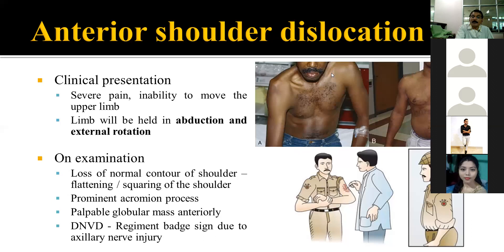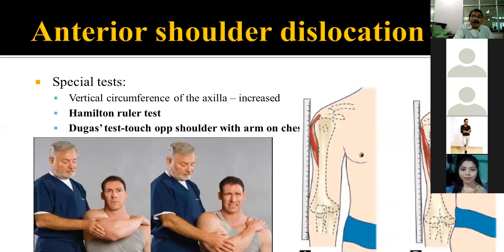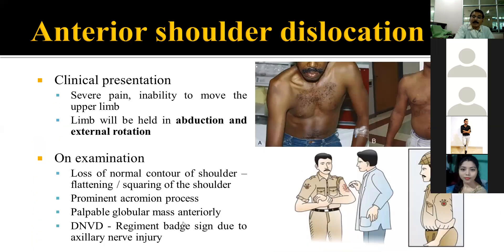Normally there is a rounded contour to the shoulder. With dislocation this contour is lost. Bryant's sign is another clinical sign where the anterior axillary fold is seen to fall downward. On inspection you will find loss of fullness on the lateral side, and sometimes additional fullness in the anterior part of the shoulder joint in the infra-coracoid region. The insinuation test is important: below the acromioclavicular arch if you try to insinuate the finger, on the normal side you cannot, but on the dislocated side you can because of loss of resistance.